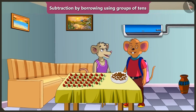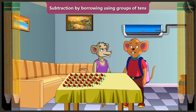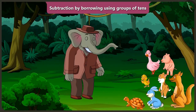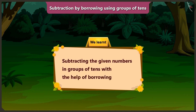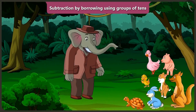Choo Choo, would you eat more chocolates? Oh no — if I eat more chocolates then my teeth will get cavities. Yes, you are right. Children, in this video you have learned subtracting given numbers in groups of tens with the help of borrowing. In the next video, we will see how Chichi and Chuchu use borrowing for subtractions while making a bouquet of flowers.